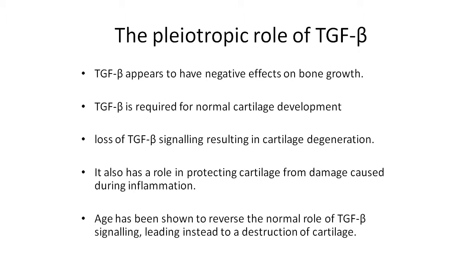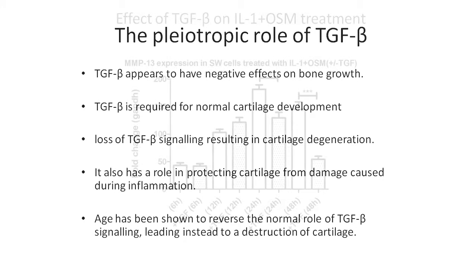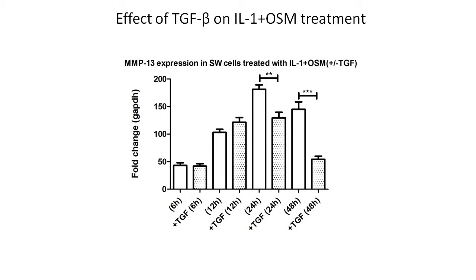As we age, TGF-beta's role changes — instead of acting as an anabolic growth factor, it becomes a catabolic growth factor that causes damage. I wanted to examine this TGF-beta effect over a number of different time points using SW1353 cells, which are a model of chondrocytes. At six hours, the addition of TGF-beta has no effect, and this seems true at 12 hours. By 24 hours we get a reduction in MMP-13 levels, and by 48 hours this reduction is even bigger, so there's an initial delay that leads to substantial repression by 48 hours.